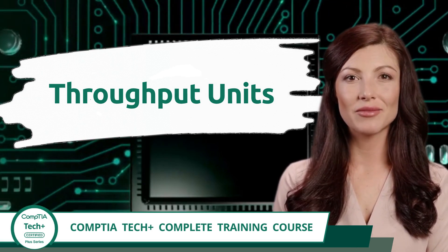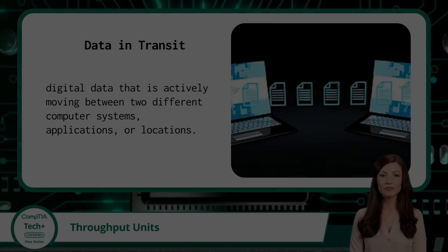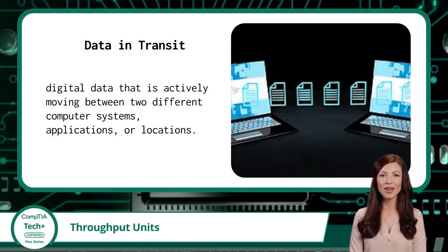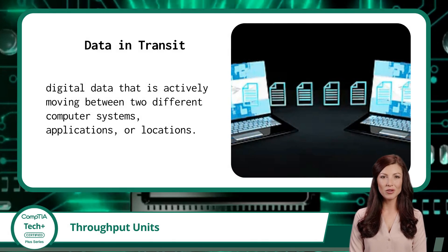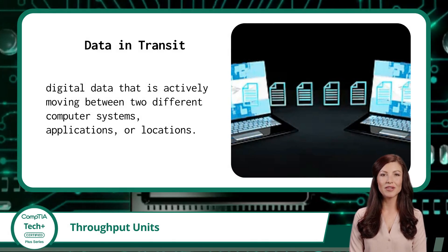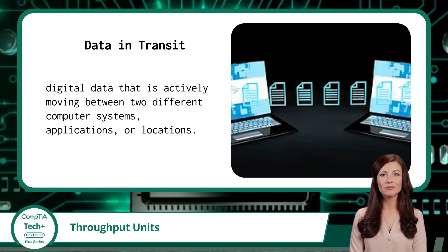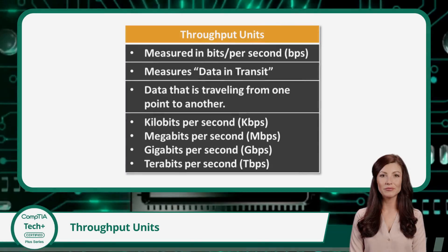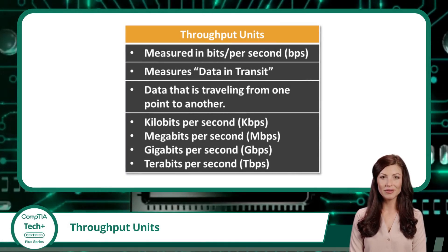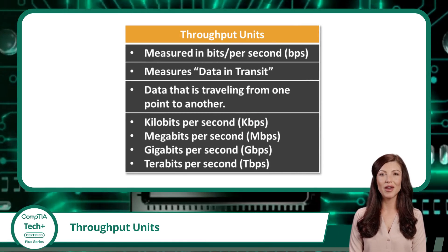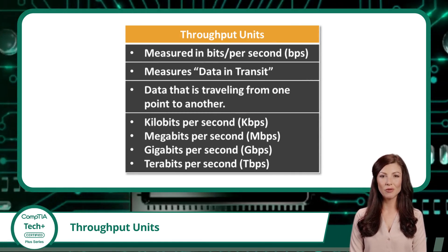Throughput units are used for data in transit. Data in transit refers to digital data that is actively moving between two different computer systems, applications, or locations. Throughput units are measured in bits per second — that is lowercase b for bits, not uppercase B for bytes.